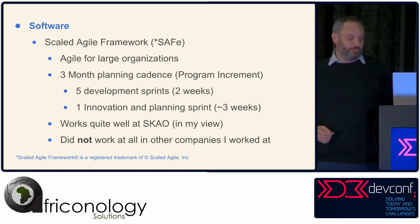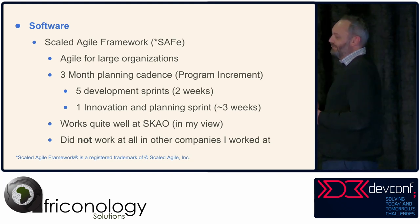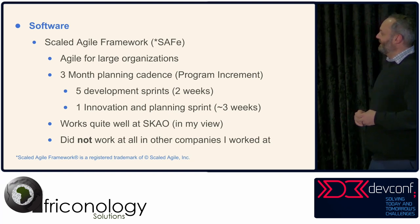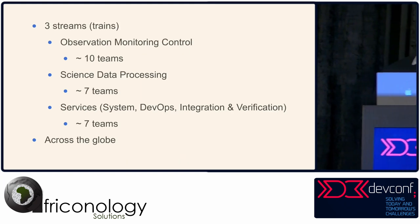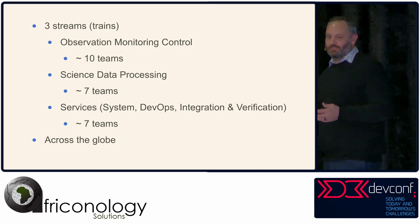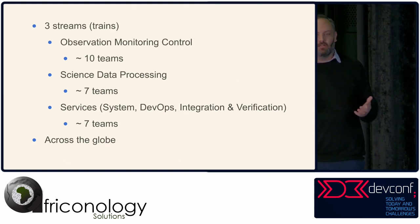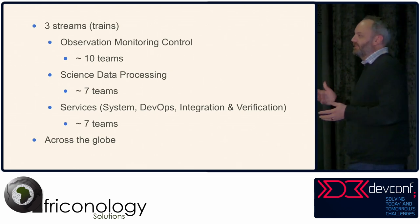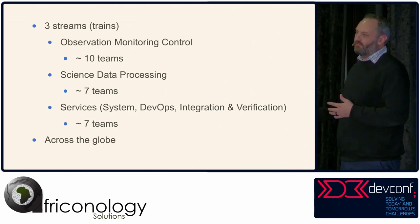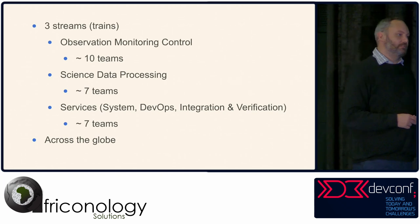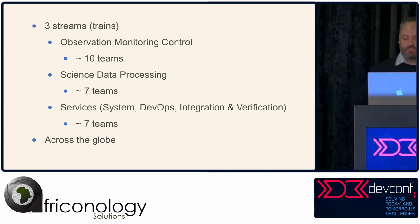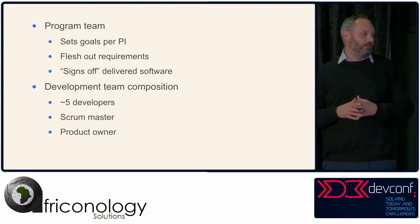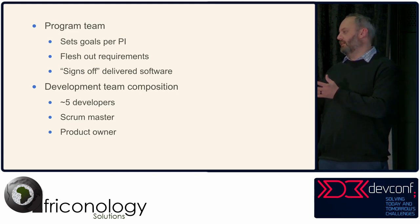SAFe works well at SKAO, though it didn't work at every place I've been — it's not a panacea. Our development effort is split into three areas: observation, monitoring and control (around 10 teams); science data processing (around 7 teams); and a services team covering infrastructure, DevOps, and integration and verification (around 7 teams), all distributed globally. A program team keeps an eye on the backlog, sets goals for three-month increments, fleshes out requirements, and signs off delivered software.